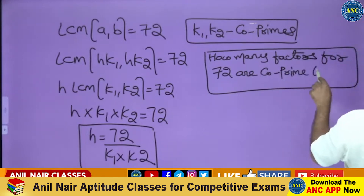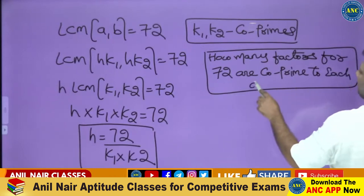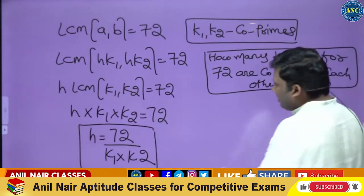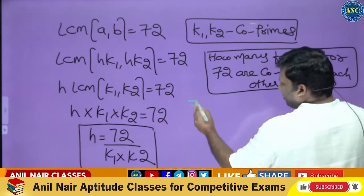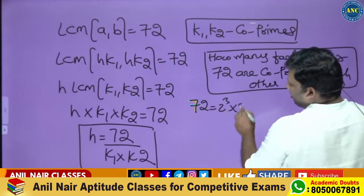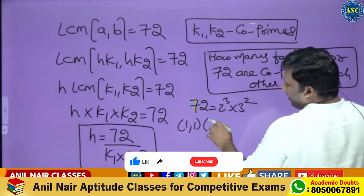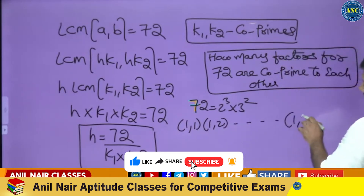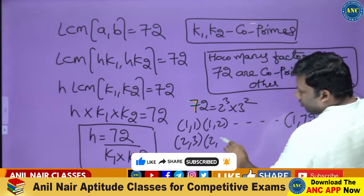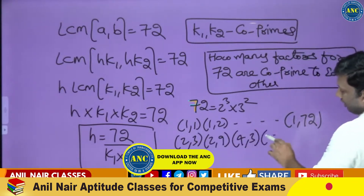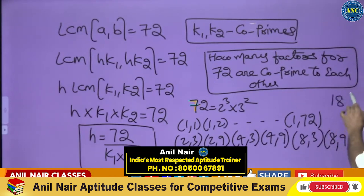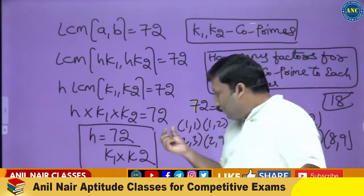72 = 2³ × 3². The cases we get are: (1,1), (1,2), ... up to (1,72), then (2,3), (2,9), (4,3), (4,9), (8,3), (8,9). These are a total of 18 cases. Now k1 and k2 must be co-prime.